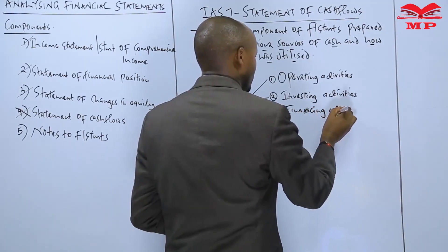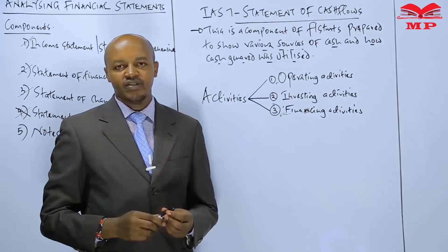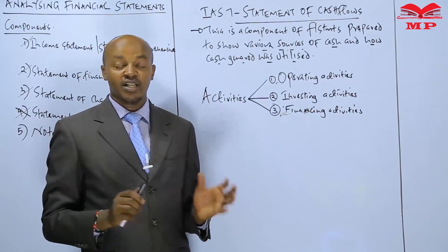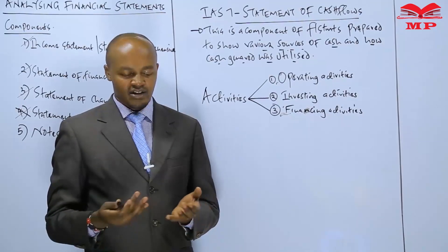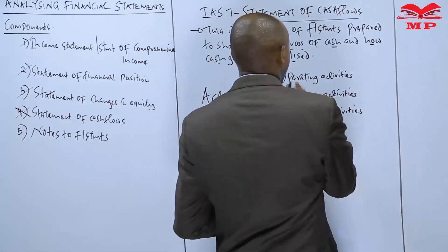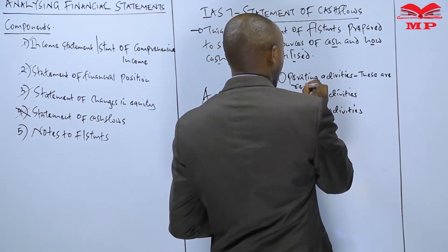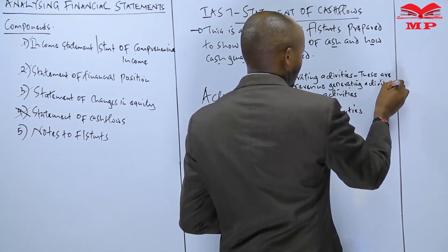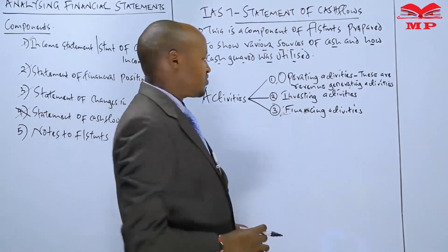When we talk about operating activities, we say that these are the revenue-generating activities undertaken by a business. Any activity undertaken by the business to generate revenue or cash is referred to as an operating activity. Good examples of such activities include the provision of services or the sale of goods by the company.